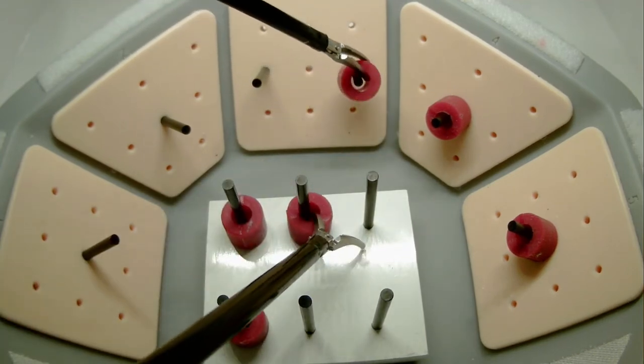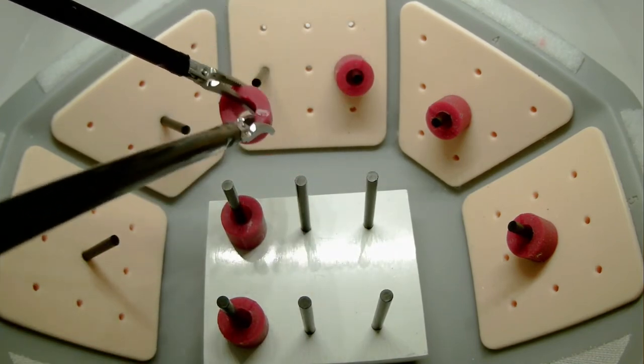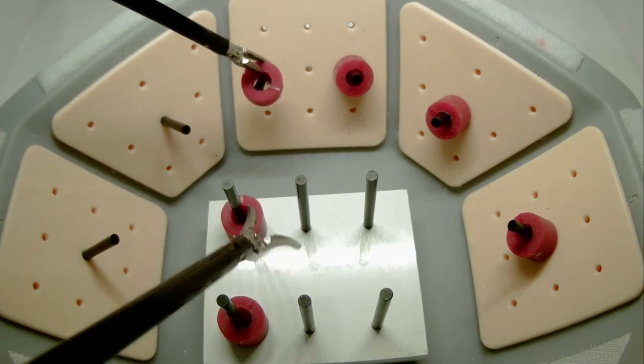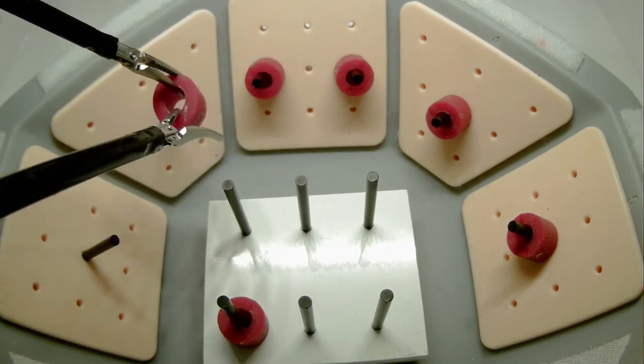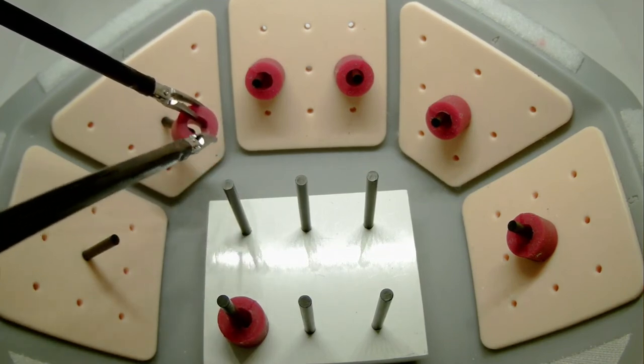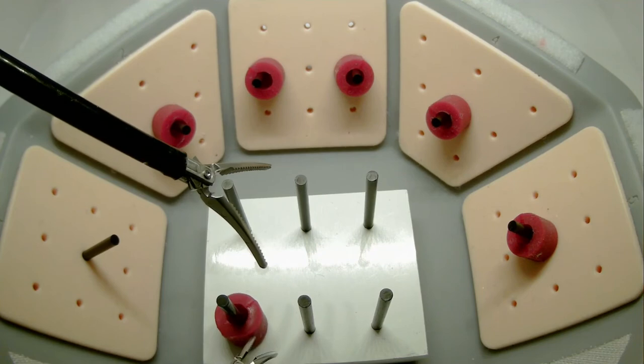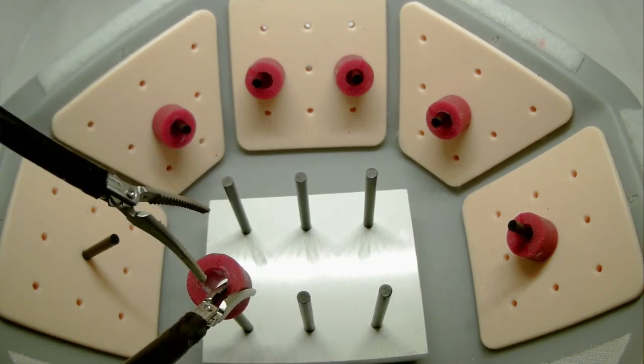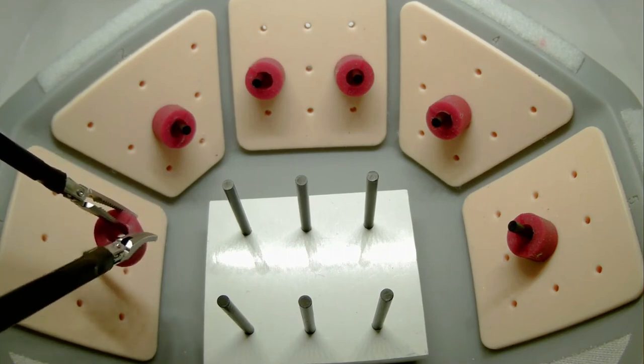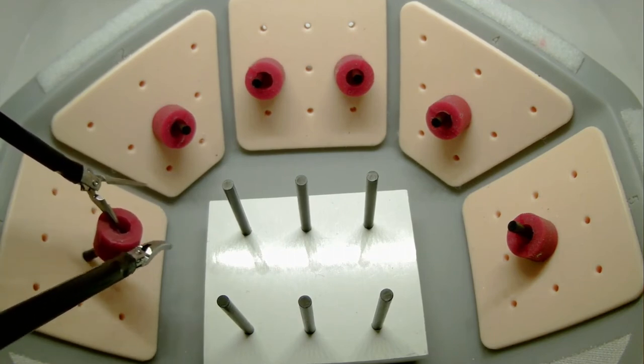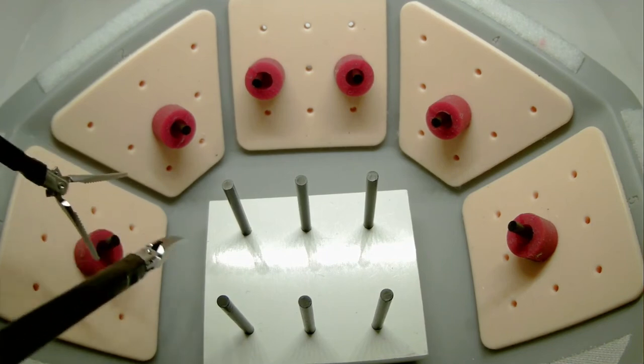You will want to ensure that the sleeve is completely flush to the laparoscopic bowl sidewall. Should you require the assistance of both hands after performing a transfer, you are allowed to do so. Once all six sleeves are on the sidewall pegs, you will reverse your process.